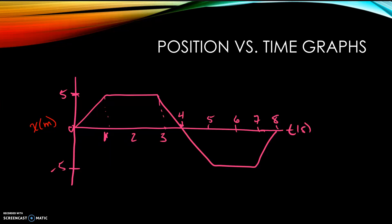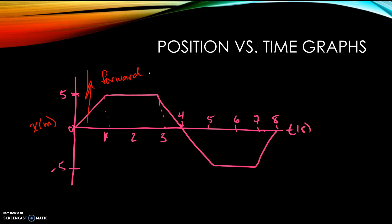The key thing to realize with a position versus time graph is that when the graph is above the origin, the object has moved forward. Whenever the graph is below the origin, the object is behind where it started. So any of these points below are behind the start, and all these points above are ahead of where it started.